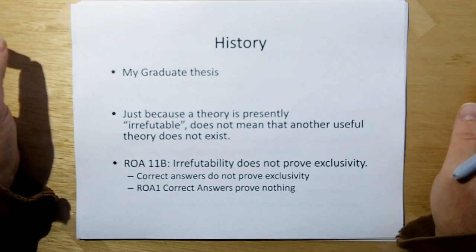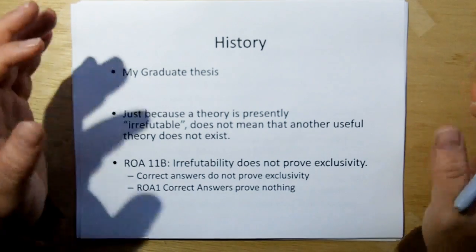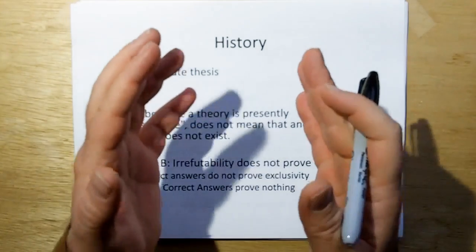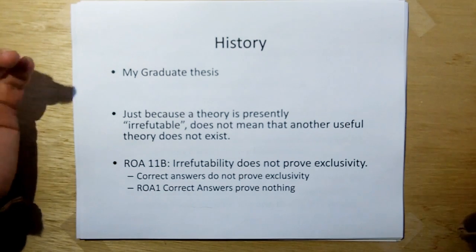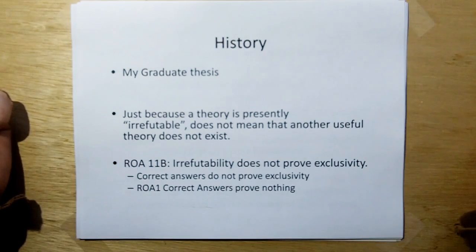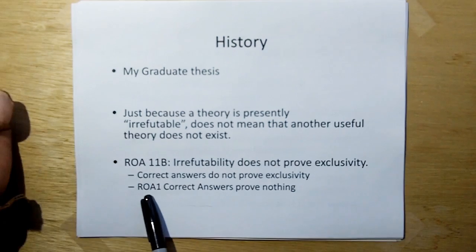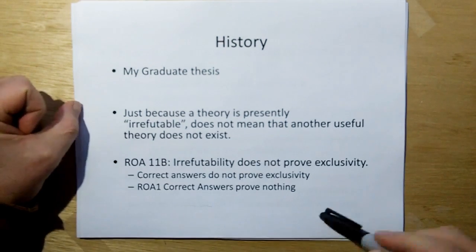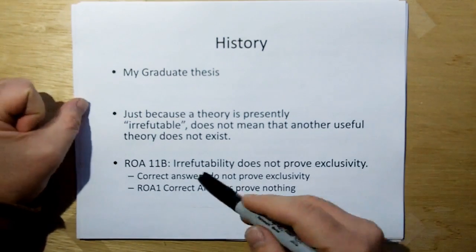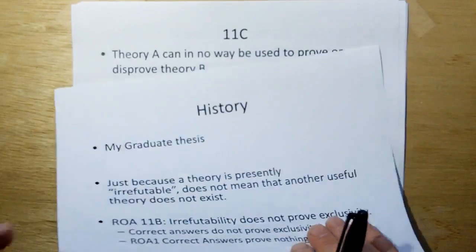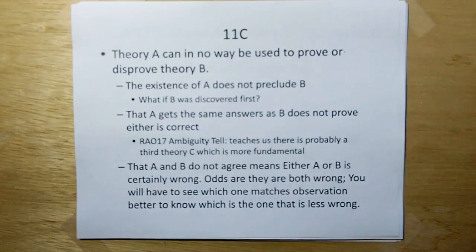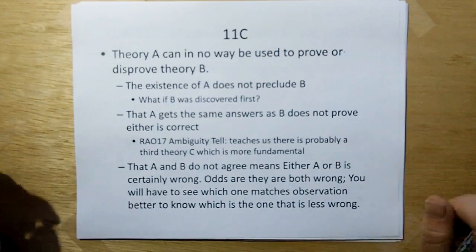Being irrefutable does not mean another model doesn't exist. In other words, irrefutability does not prove it's exclusive. And correct answers, therefore, do not prove exclusivity. And therefore, we go back to rule of acquisition 1, correct answers prove nothing. So really, 11B is kind of a corollary of rule of acquisition 1. The reason why I made rule of acquisition 1 the rule of acquisition 1, it is the one that transcends all the others.